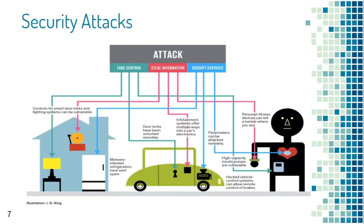Attacks on IoT systems can be broadly classified into three main categories: taking control of smart appliances, stealing information such as door lock authorization codes or exact location data from fitness devices, and disrupting live services — for example, malware-infested refrigerators have sent spam links or distributed denial-of-service attacks against companies.